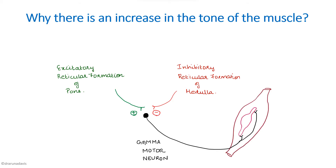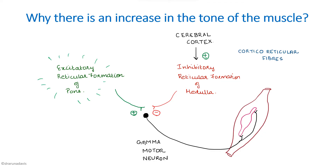The excitatory reticular formation of the pons is spontaneously discharged — it doesn't need any help to discharge. But the inhibitory reticular formation is under the influence of the cerebral cortex. The cerebral cortex constantly stimulates the inhibitory reticular formation so that it can always inhibit the gamma motor neuron. In the net effect, there will always be a small baseline tone resulting from the excitatory effect of the pons balanced by the inhibitory effect of the medulla.